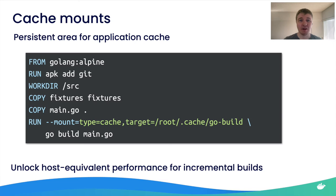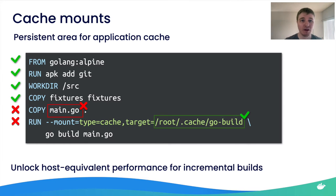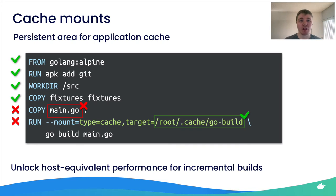When you make changes to your code and run the build again, the Go compiler still has access to its previous directory — the cache at `/root/.cache/go-build` — so it still runs much faster. Cache mounts are very important when you're running lots of builds and want to speed up incremental builds. It gives you host-equivalent performance inside your Docker builds for this use case.